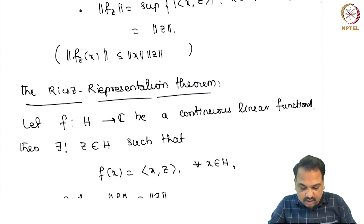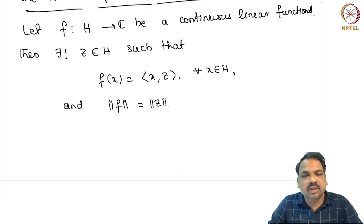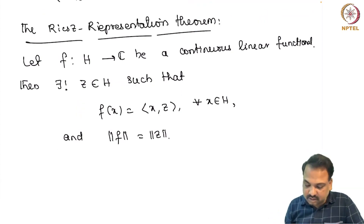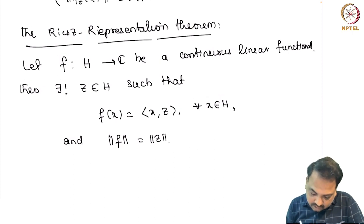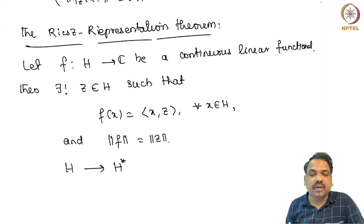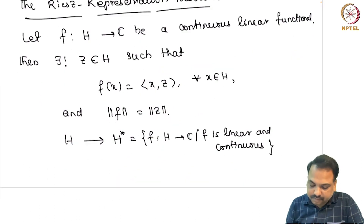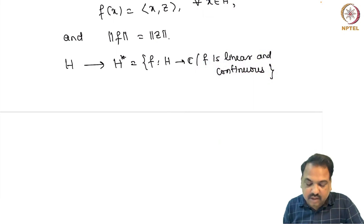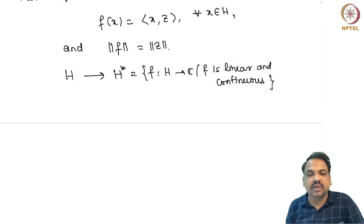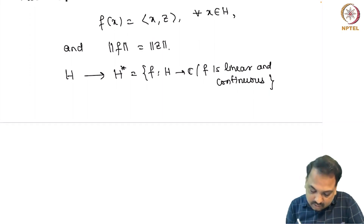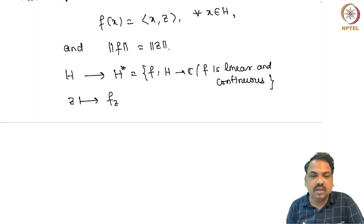Combining both results, all functionals on a Hilbert space are of the form: inner product with a particular vector Z. This vector Z is called the Riesz representer of the functional F. In other words, we have established a connection between H and its dual space H*, where the dual space is the set of all continuous linear functionals. Since H is non-zero, we can conclude H* is also non-zero, because given any Z in H we can create a functional and vice versa.